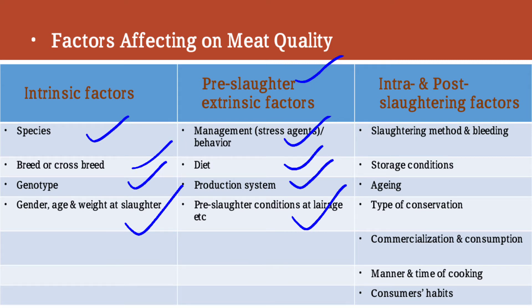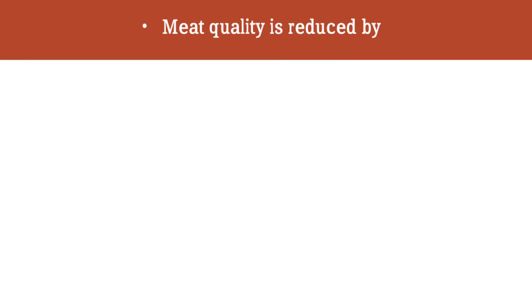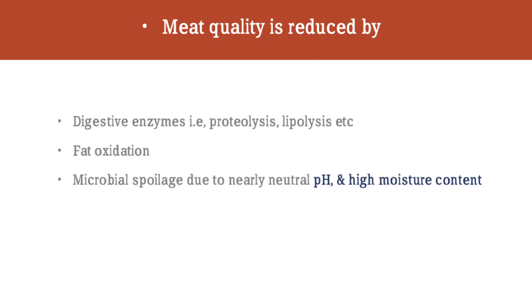Intra- and post-slaughtering factors are also extrinsic factors influencing meat quality. These include the slaughtering method and loss of blood, storage conditions, aging of the meat, type of conservation, commercialization and consumption of the meat, manner and time of cooking, and consumers' habits.